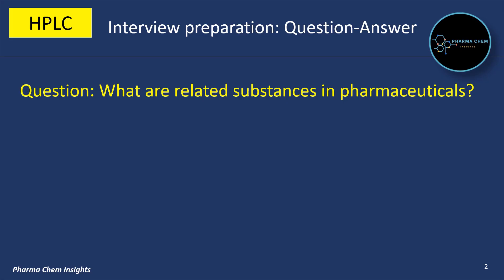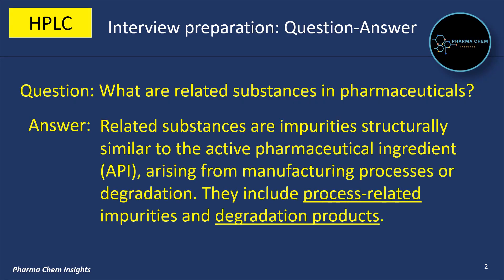First question: what are related substances in pharmaceuticals? Related substances are impurities structurally similar to the active pharmaceutical ingredient (API), arising from manufacturing processes or degradation. They include process-related impurities and degradation products.